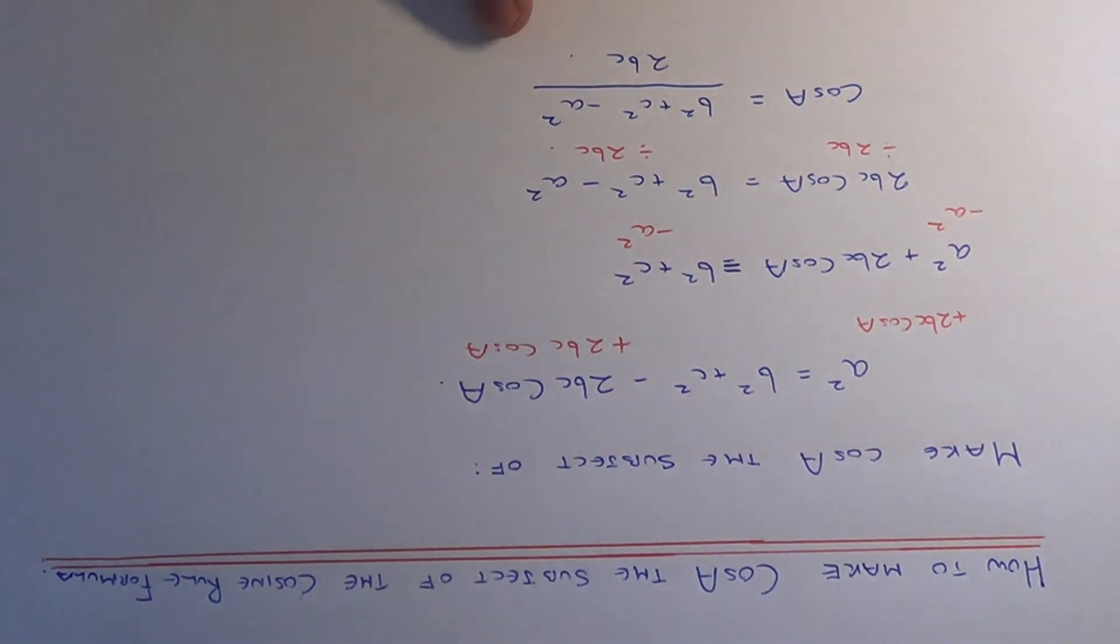And this is the formula which you use for working out the angle in a non-right angle triangle if you're given three of the side lengths. Thanks for watching.